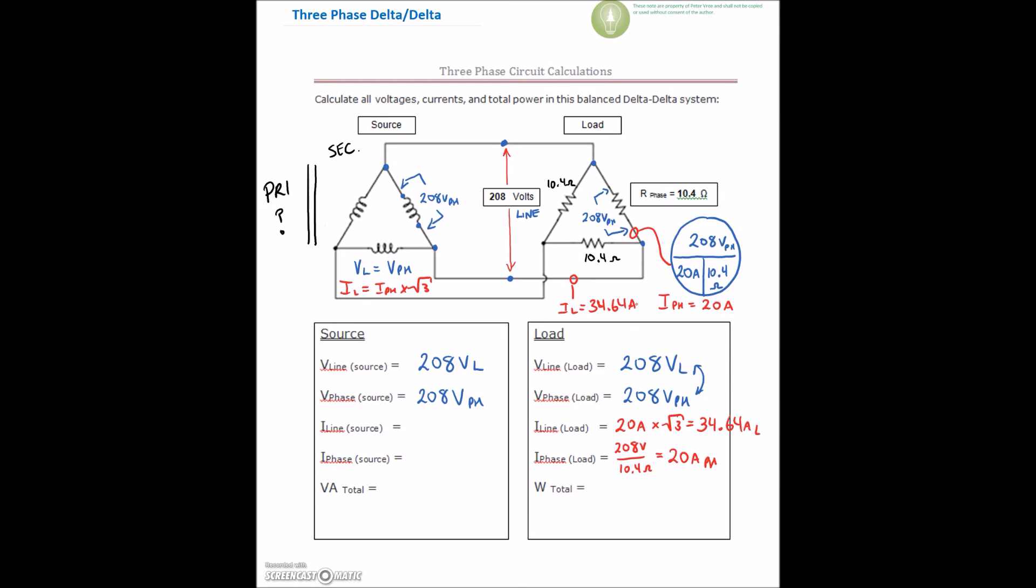I've already got the phase there. So this value right here is 34.64 amps. Well, that current is coming from right here. That's the same piece of wire. So we've got 34.64 amps on the line. And we've just found that on the delta, on the inside of the delta, it's less current by a factor of root 3. So we'll find that our current on the inside is 20 amps on the phase.